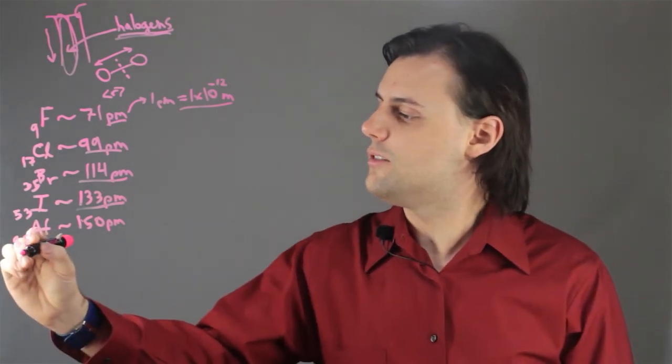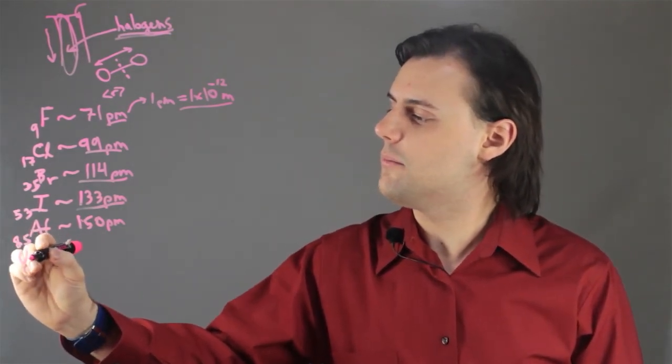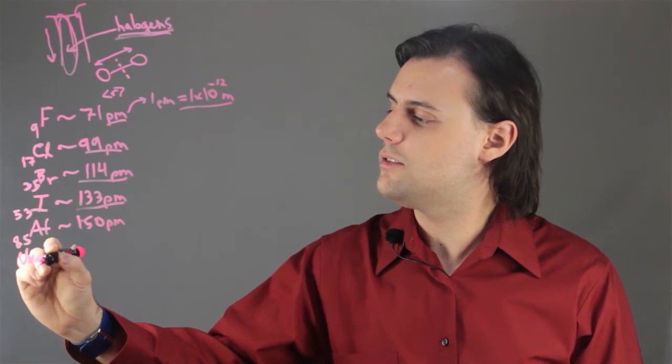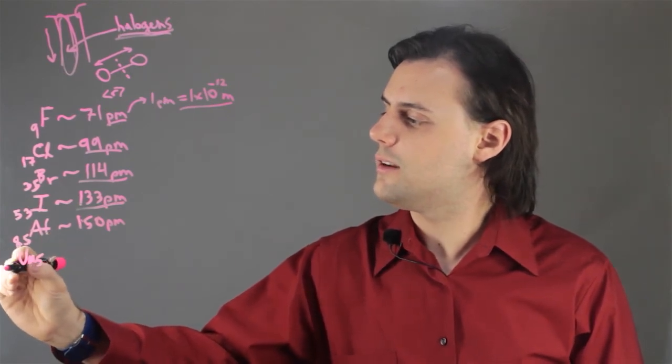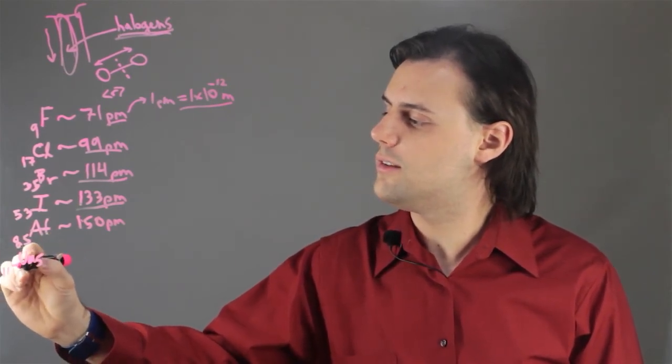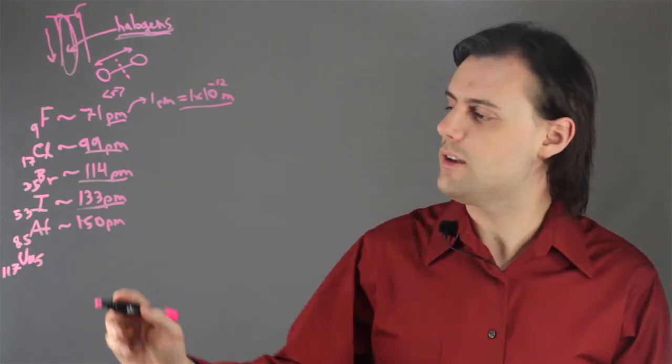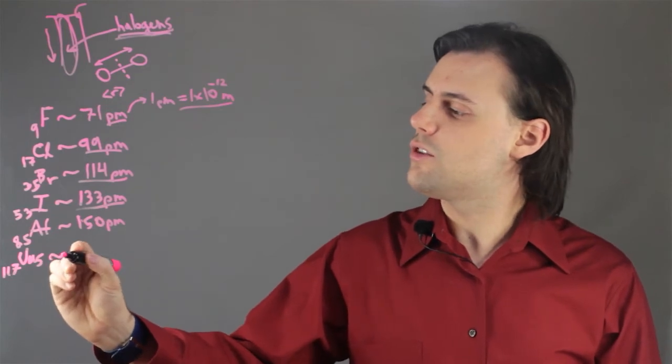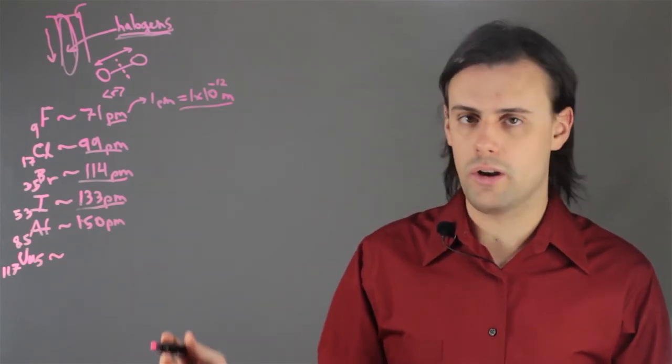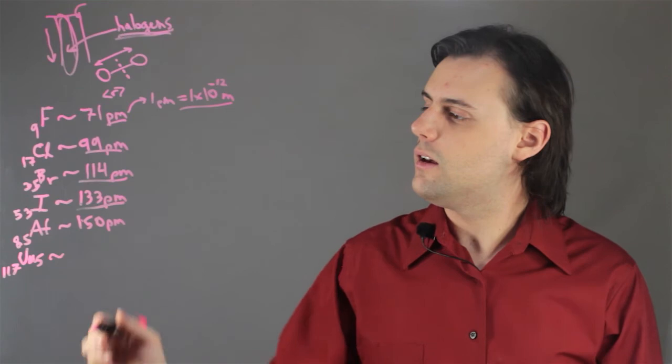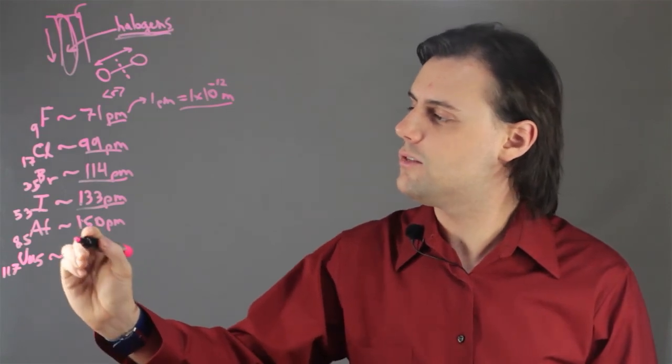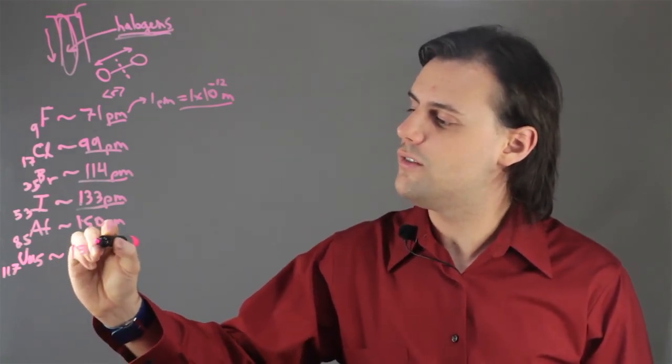It's known as ununseptium, or UUS for short, and it is number 117 in the periodic table, meaning it has 117 protons in its nucleus. Through experimental data, one can extrapolate an approximate atomic radius of 156 picometers.